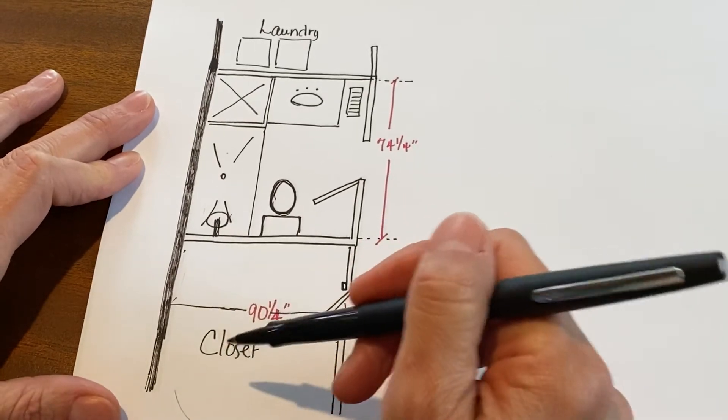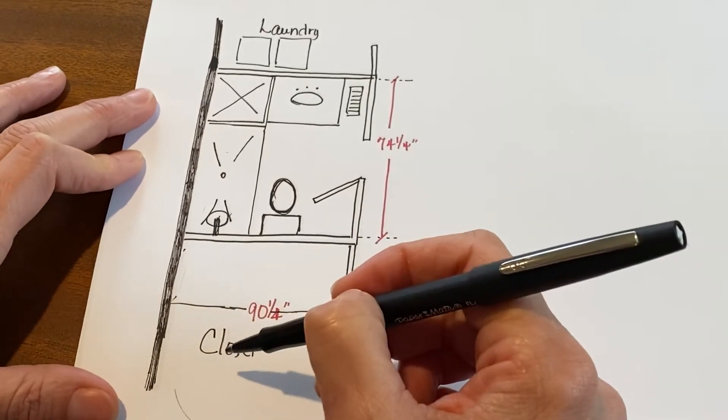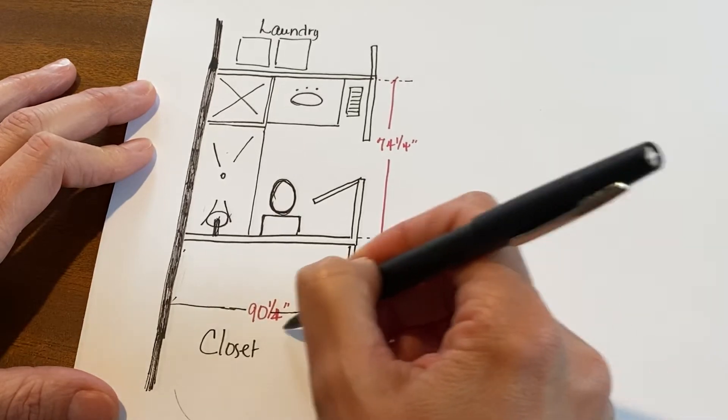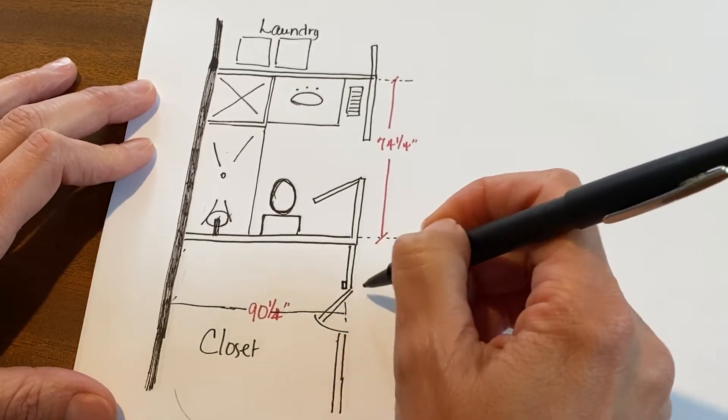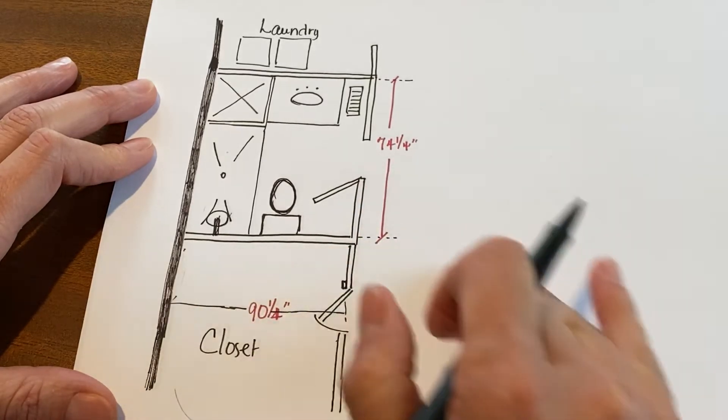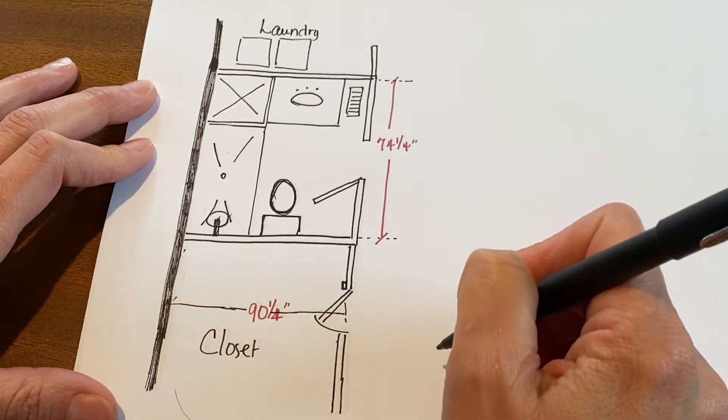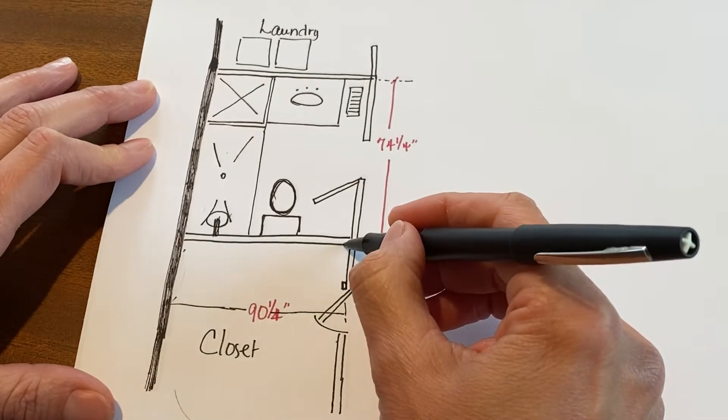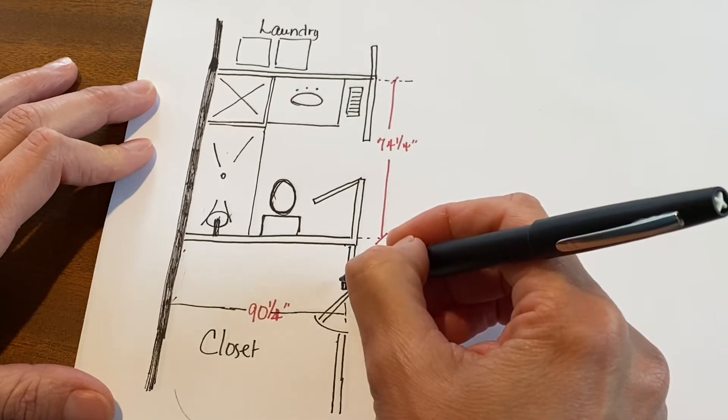So I started looking to that space to think, 'How can I utilize it?' The doorway to get into the closet—I kind of didn't want to move. They had already remodeled some of this room out here, so it already had nice casing around it and so forth.